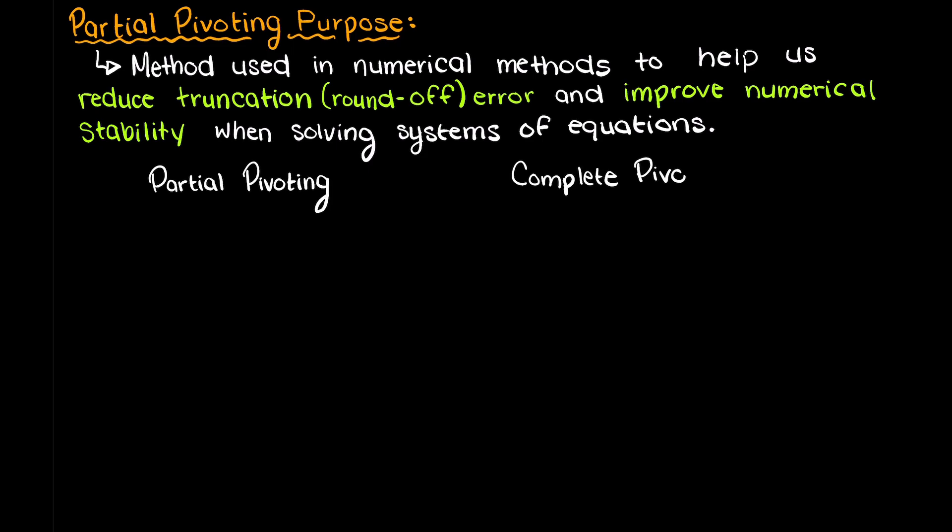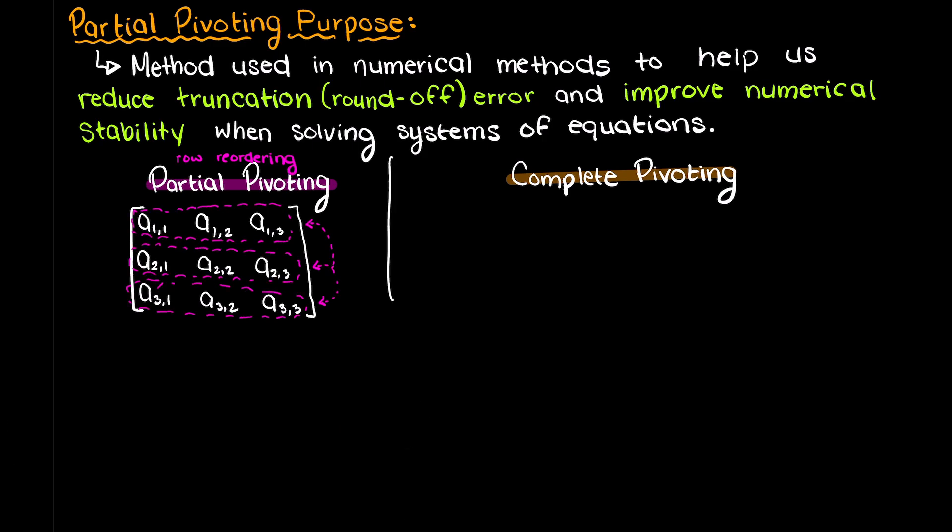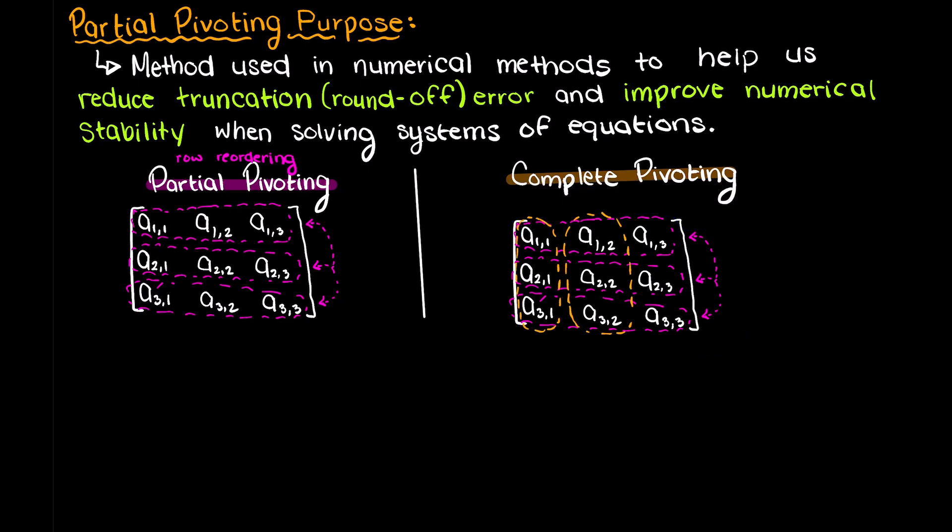Firstly, we can have partial pivoting or full or complete pivoting. Partial means we only consider and move rows within our matrix, thereby changing the order in which we present our matrix, whereas full or complete pivoting considers both rows and columns, and thereby changes the order in which our equations are presented and the variable order.